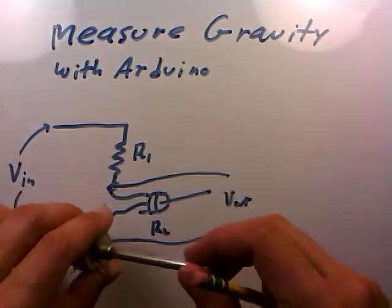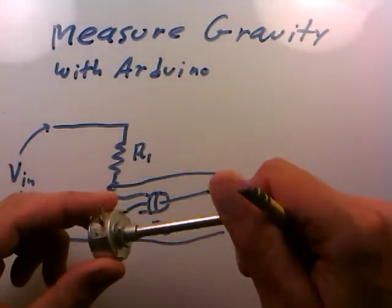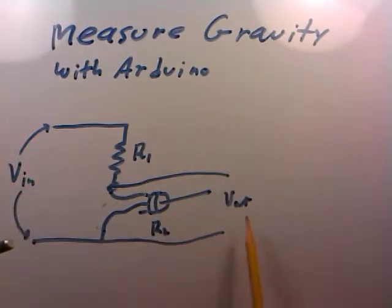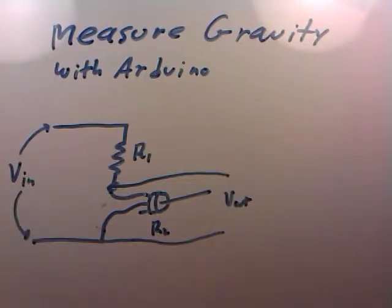As long as this potentiometer axis is turning, Vout will change. So we essentially have Vout related to the angular position of the potentiometer knob. Okay, so that's the circuit we're going to build.